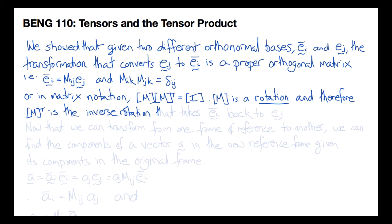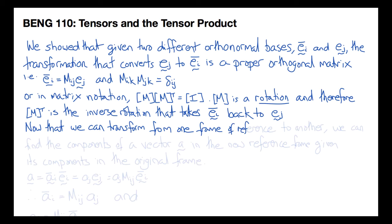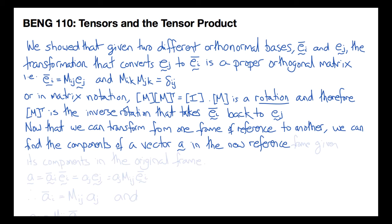As we showed last time, the components of this matrix are the direction cosines — the cosine of theta_IJ between each of the three base vectors in one coordinate frame and each of the three base vectors in the other coordinate frame. So now that we can transform from one frame of reference to another, we must be able to find the components of a vector A in the new frame of reference given its components in the original frame.